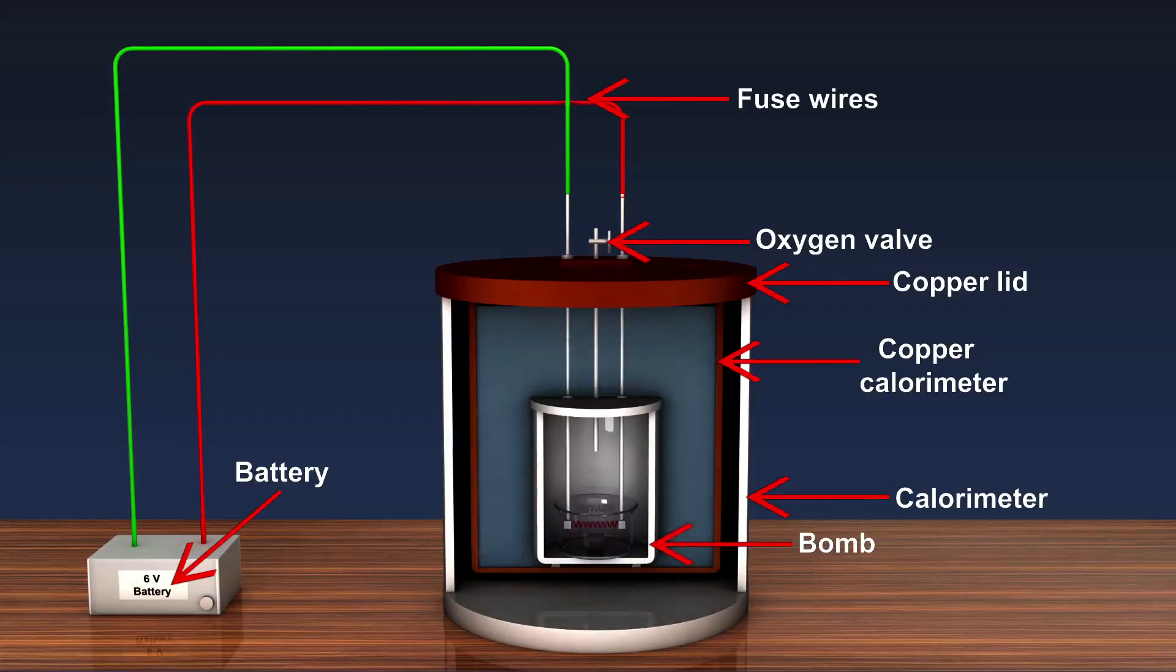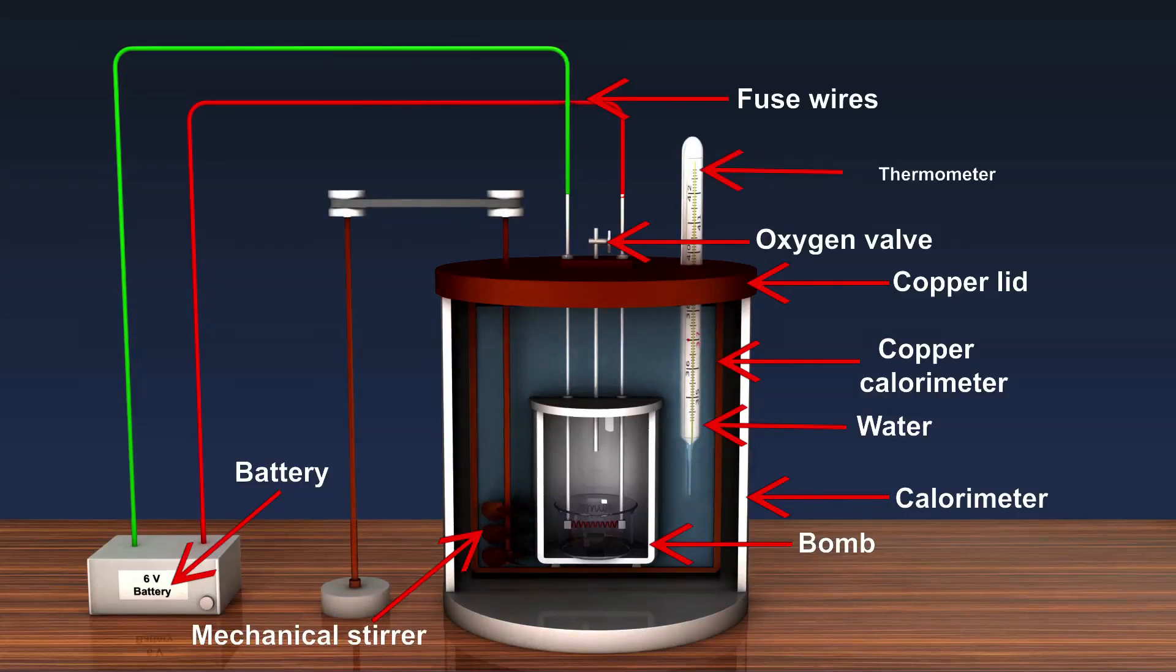The space between the calorimeter and the bomb is filled with water. A mechanical stirrer is placed and on the opposite side of the stirrer, a thermometer is installed.